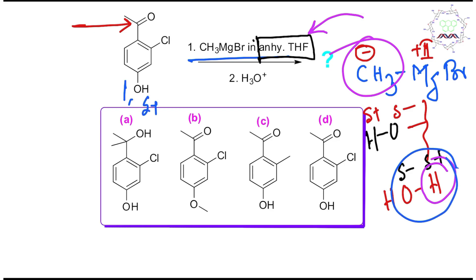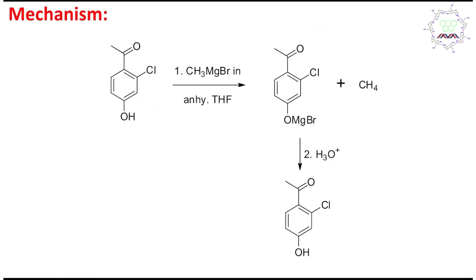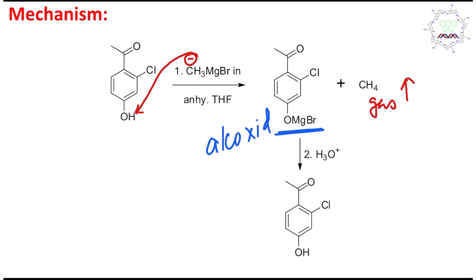Regarding the OH group: the hydrogen is delta positive and the oxygen is delta negative, so it will react very fast with the carbanionic Grignard. Remember, acid-base reactions are the fastest reactions — faster than nucleophilic addition on a carbonyl carbon. What happens is the carbanion from the methyl abstracts the proton from OH, producing methane gas, which escapes from the reaction medium. The remaining part becomes O⁻ MgBr, which is an alkoxide.